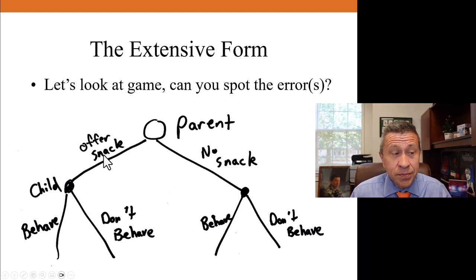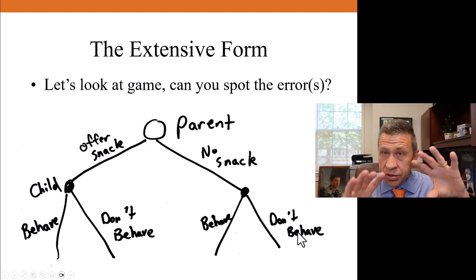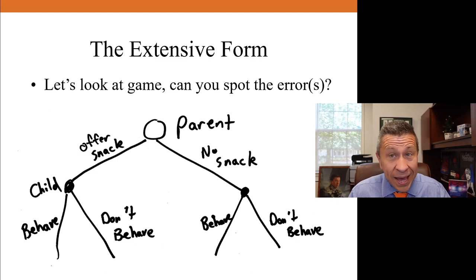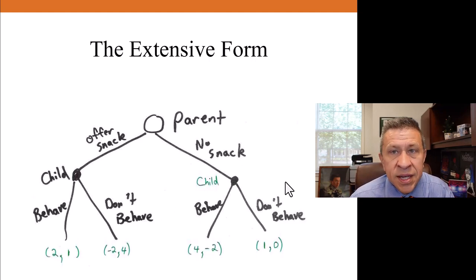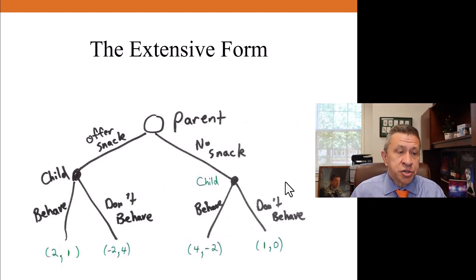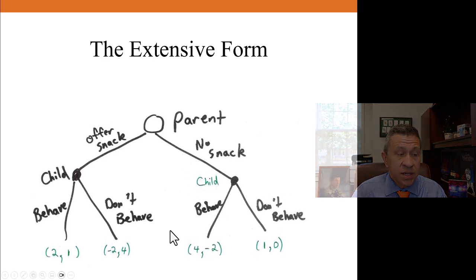The other error, our game concludes after the parent offers the snack or not and the child chooses to behave or not. So we have the outcomes. Offer snack, behave would be an outcome. Offer snack, don't behave would be another outcome. No snack, behave, and no snack, don't behave. Those are the four possible outcomes, but it doesn't list the payoffs for those outcomes. I've put these in green and I put monetary payoffs that I thought made a little bit of sense given the preferences for both the parent and the child. So those were the two errors. Child should have been denoted at both decision nodes, not just one. Payoffs should have also been listed.